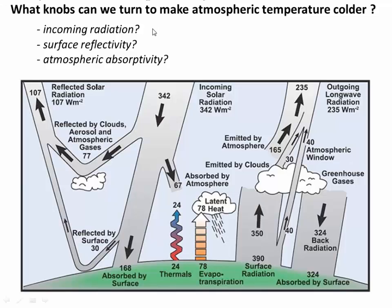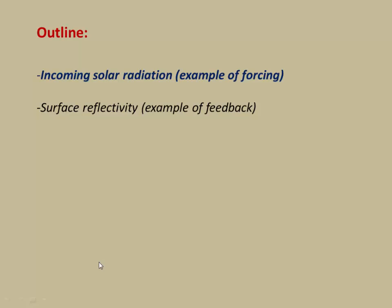In this lecture we'll look at a couple of these knobs. We'll look at what happens if we change incoming radiation, and what happens if we change surface reflectivity — the amount of energy reflected by the surface. Throughout the video, we're also going to develop the theme of forcings and feedbacks. Changes in solar radiation will be an example of a forcing — something external to the system — and changes in reflectivity will be an example of a feedback, something internal to the system.